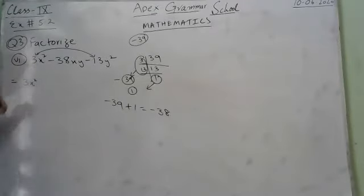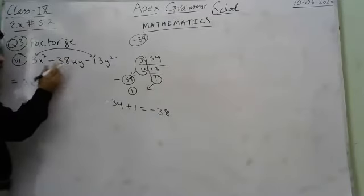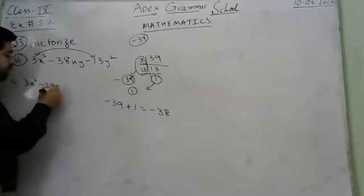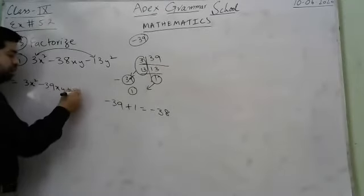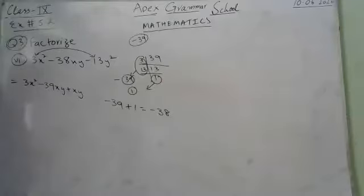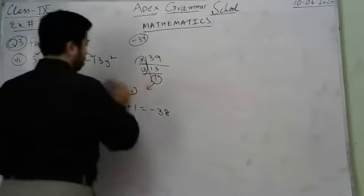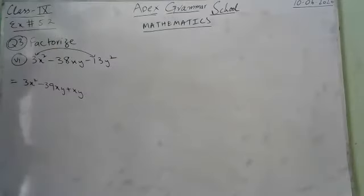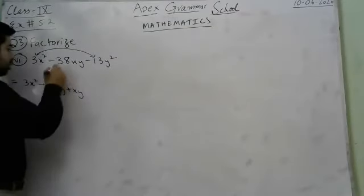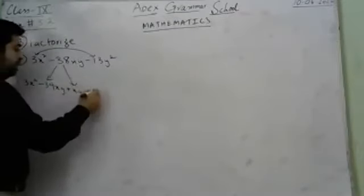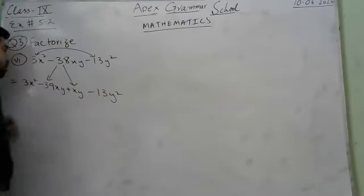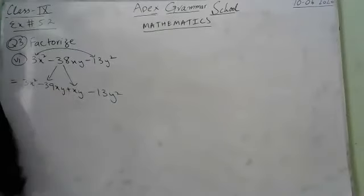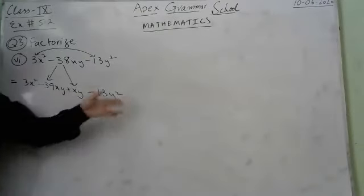We rewrite 3x² minus 38xy as 3x² minus 39xy plus xy minus 13y². Now we have 4 terms to work with for grouping.